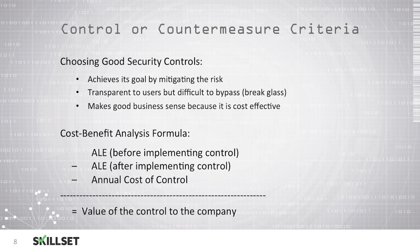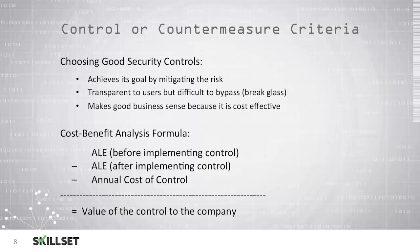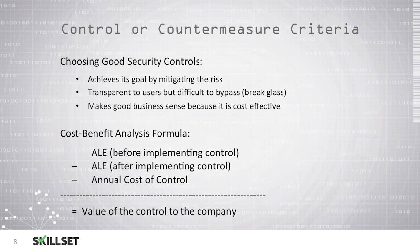When we're choosing security controls, we should make sure that they achieve their goal by mitigating the risk. For example, if we're trying to avoid a fire, we want to make sure that a fire suppression system is able to put out a fire properly. The system should be transparent to the users but difficult to bypass — for example, breaking glass. It's very easy for users to see through glass, but an intruder cannot easily get through without breaking it. Good controls will make business sense because they are cost effective. We would not want to spend thousands of dollars to protect an asset that's only worth a few hundred dollars.